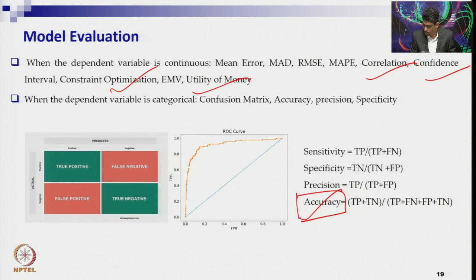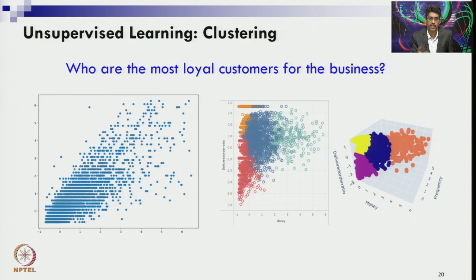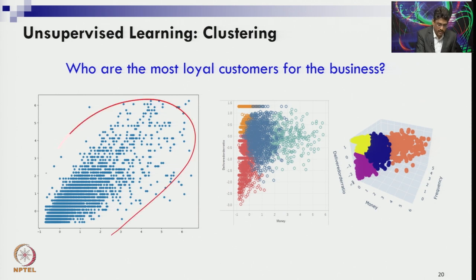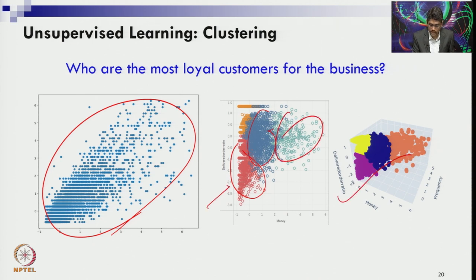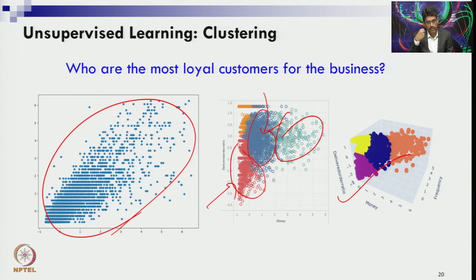You can also use confidence interval, correlation coefficient, expected monetary value, and optimization threshold values as measures of accuracy. In each and every model, you need to evaluate accuracy through these techniques. For example, using clustering (unsupervised learning) you can classify data into categories to understand whether old age, middle age, or younger age people are buying your product — this is part of both model evaluation and the model building process.